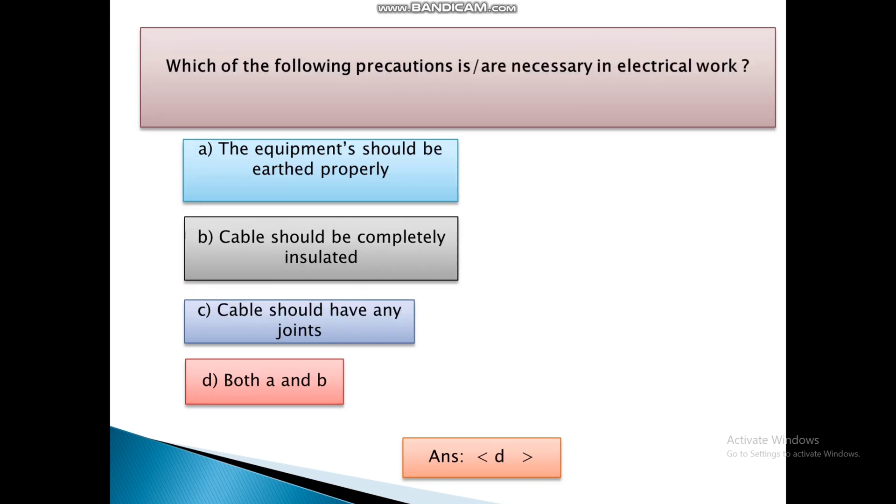Which of the following precautions is or are necessary in electrical work? First, The equipment should be earthed properly. Second, Cable should be completely insulated. Third, Cable should have any joints. And Fourth is Both A and B. And the answer is D, that is both A and B. These are the precautions necessary in electrical work.